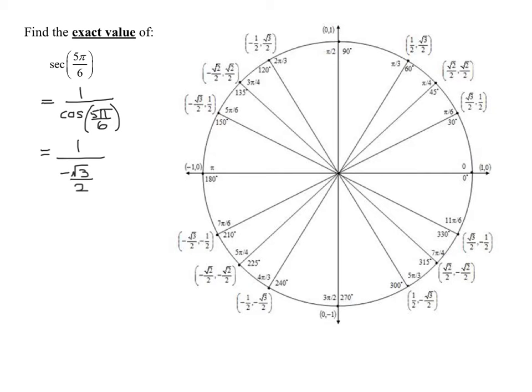And how do we divide by a fraction? We multiply by the reciprocal. So this becomes 1 times the reciprocal of this, which is negative 2 over the square root of 3.